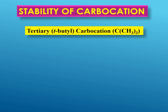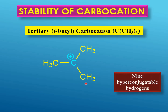When we move on to the tertiary carbocation — an example of which is the tertiary butyl carbocation — the central carbon with the empty p orbital has three CH3 groups attached to it, and all three hydrogens on each of these CH3 groups can be involved in hyperconjugation, giving a total of nine hyperconjugatable hydrogens. This means more chances of hyperconjugation, more dispersion of the positive charge, and therefore more stability. That is why a tertiary carbocation is more stable than a secondary, which is more stable than a primary, which is more stable than a methyl carbocation. As mentioned earlier, this is not the only reason for this stability order, but here we have focused on the effect of hyperconjugation on the stability of carbocations. Thank you so much for watching.